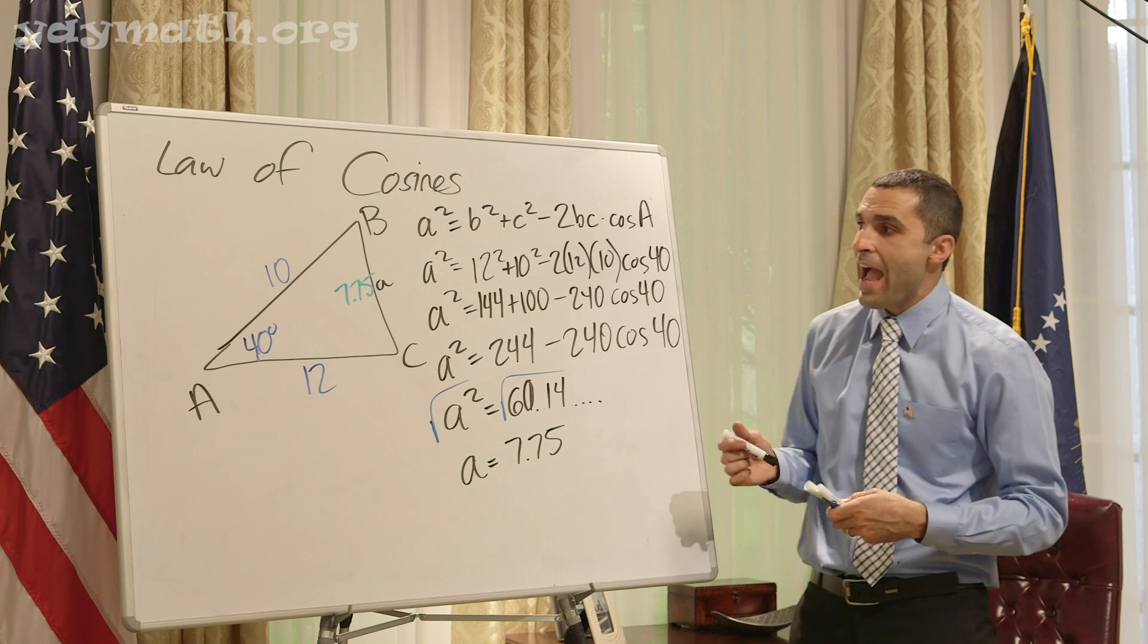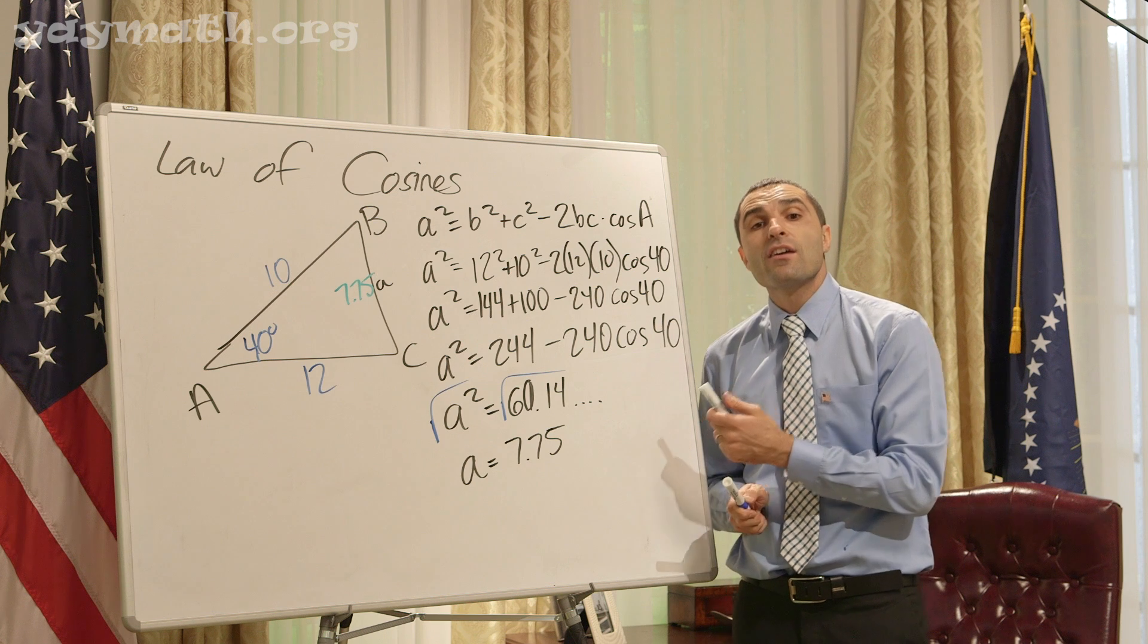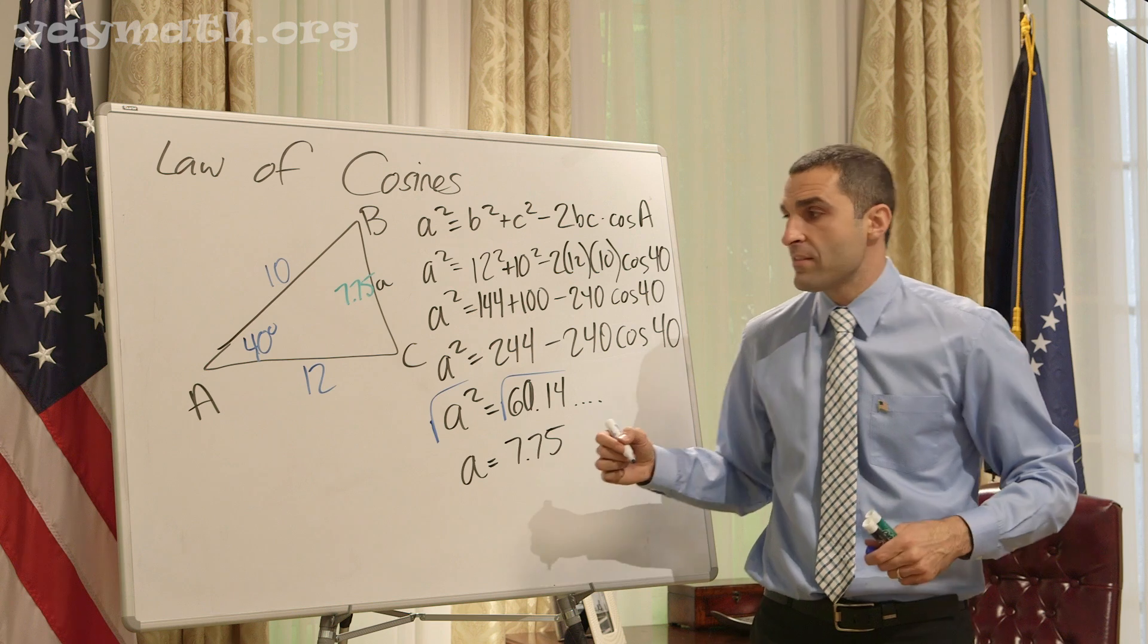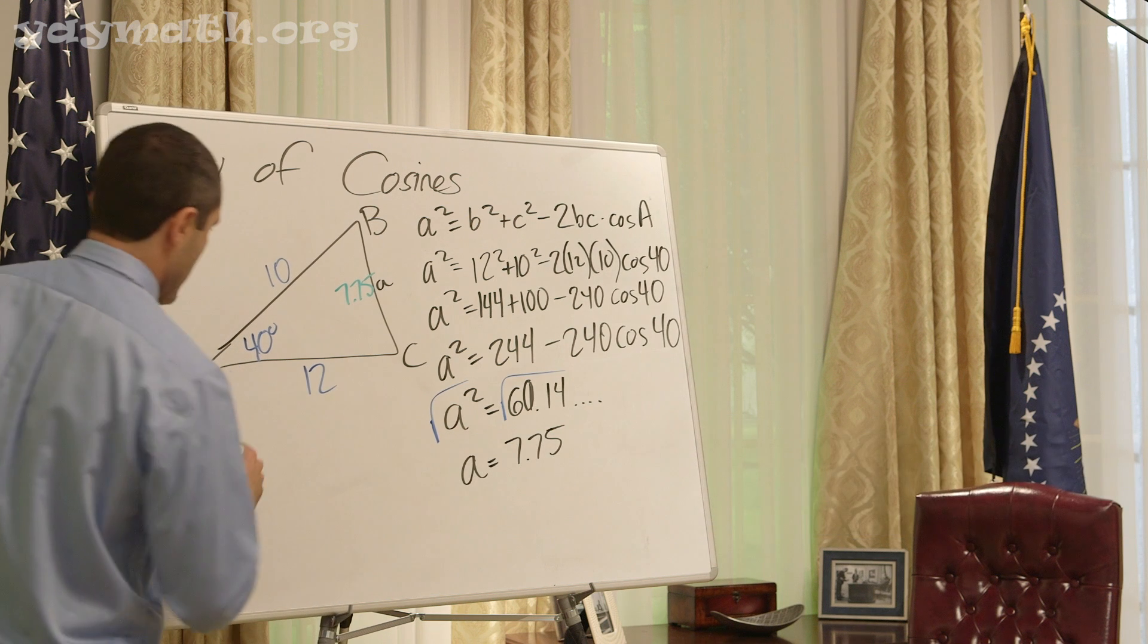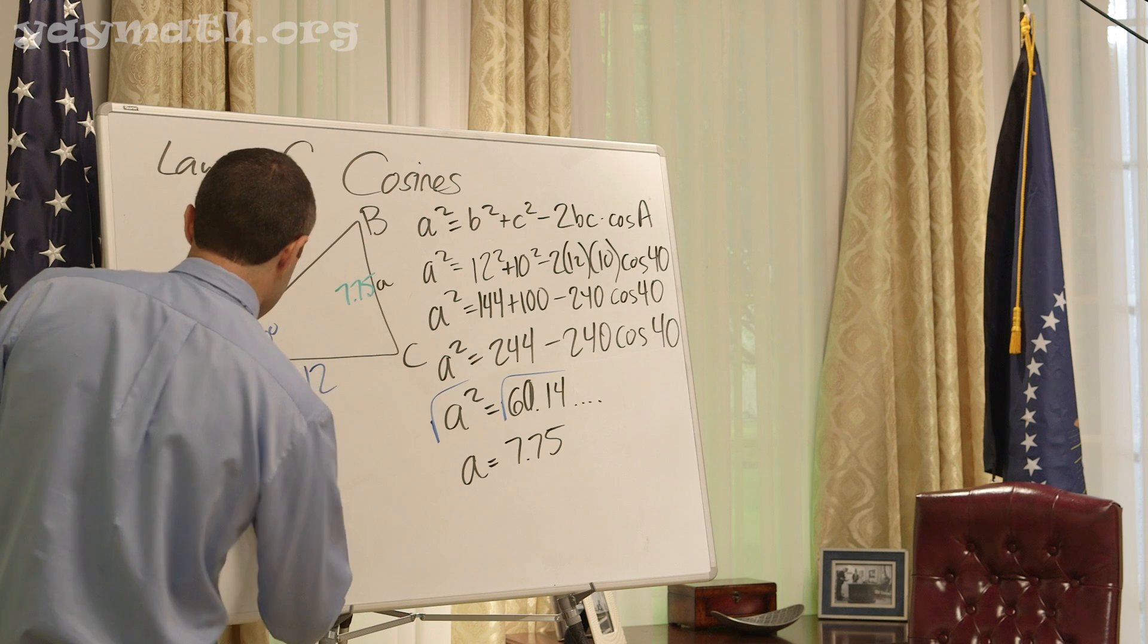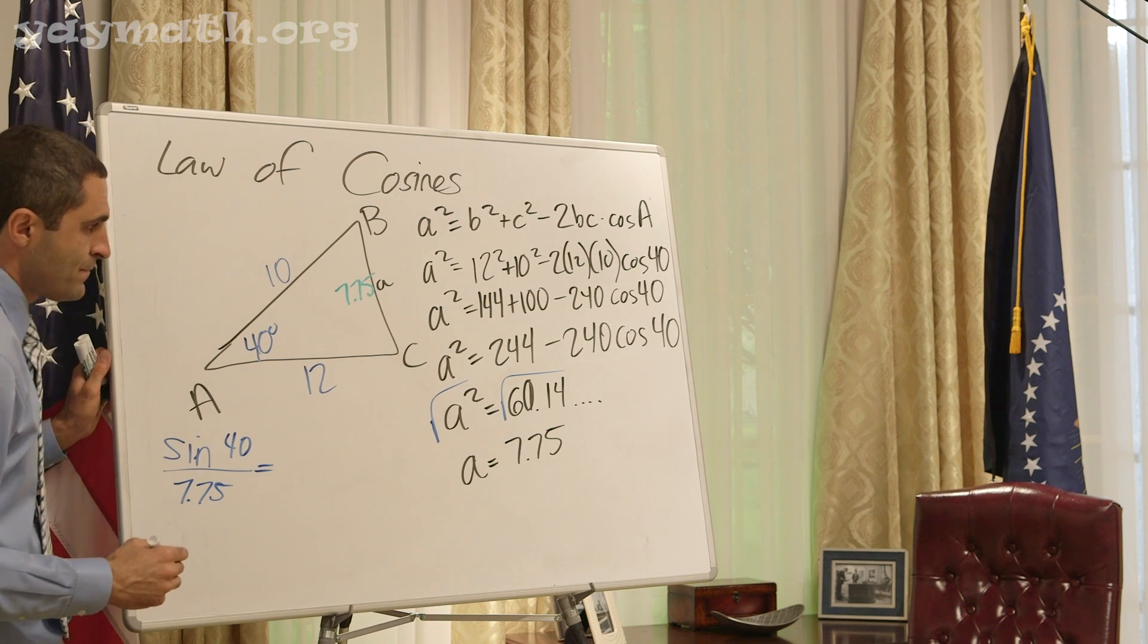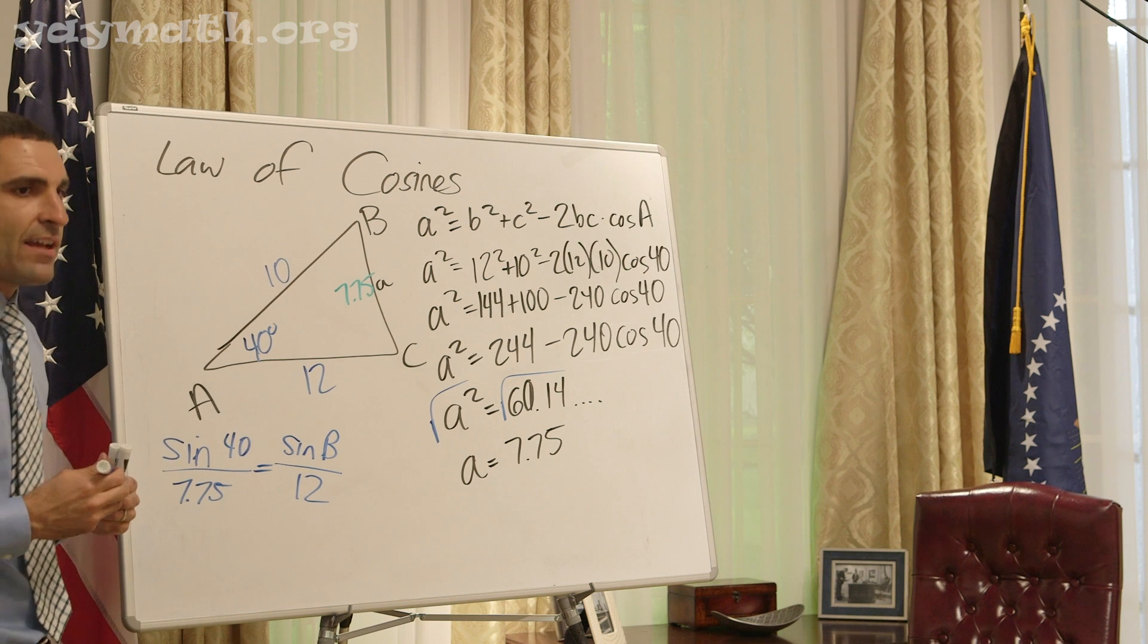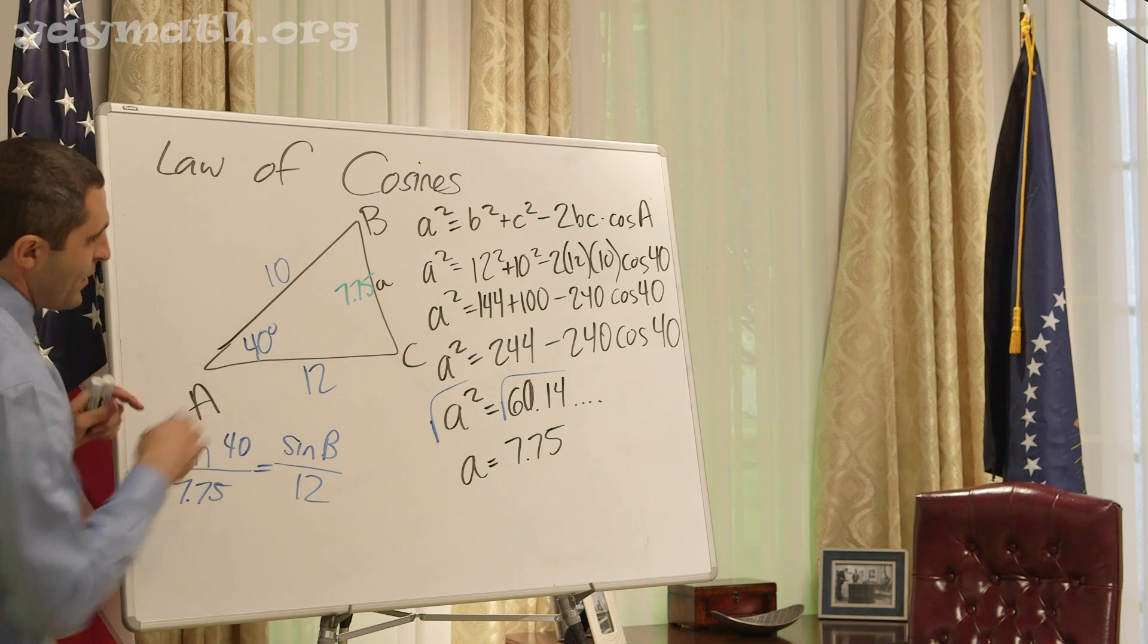Now how would you solve for missing angles? Now that you have 7.75, could you do Law of Sines? Yes. Try, just give us a setup. Sine of 40 over 7.75 equals sine b over 12.